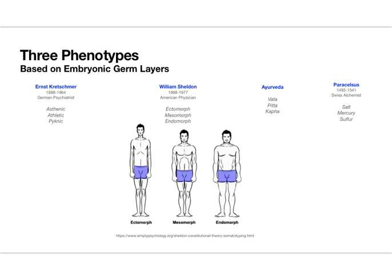This idea of the three germ layers and three-pole principles has found expression in human typology — looking at phenotypes, not just genotypes. Ernst Kretschmer, a German psychiatrist, described three constitutional types: the asthenic, the athletic, and the pyknic. William Sheldon, an American physician and psychologist, developed the types now known as the ectomorph, mesomorph, and endomorph, named after the three germ layers. The ectomorph — more from the neurosensory zone — is more lanky and thin. The endomorph — from digestive activity — is shorter and more stocky. The mesomorph — from the cardiovascular muscle zone — is in between.